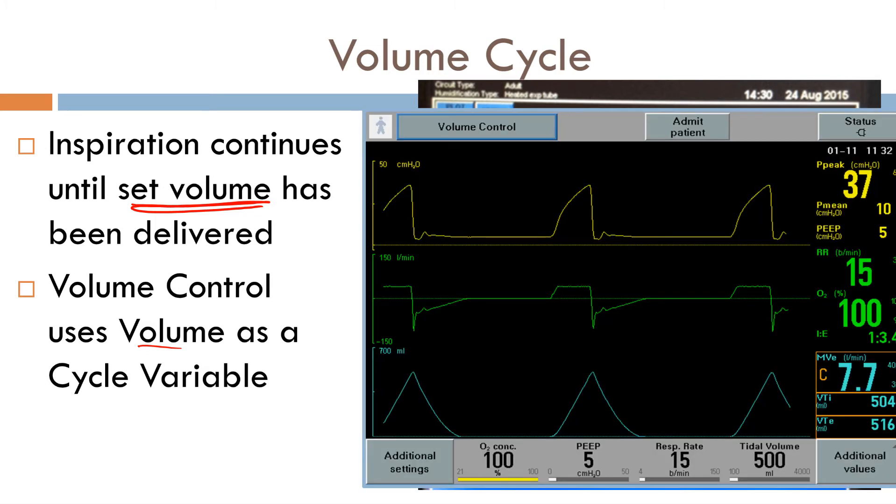So let's take a look at this. Here we can see we're in volume control as well. And our cycle variable is here, 500 cc. So once 500 hits here, it stops delivering your breath. So in volume control ventilation, the cycle variable is volume.